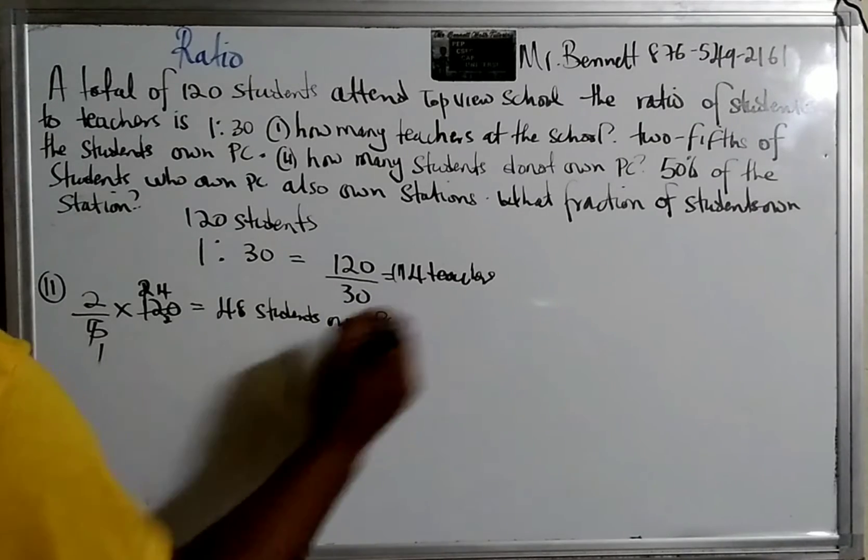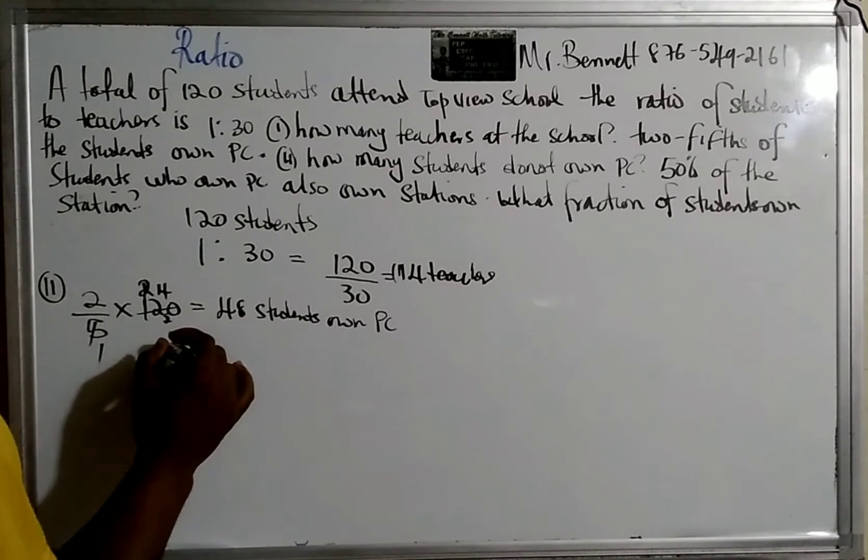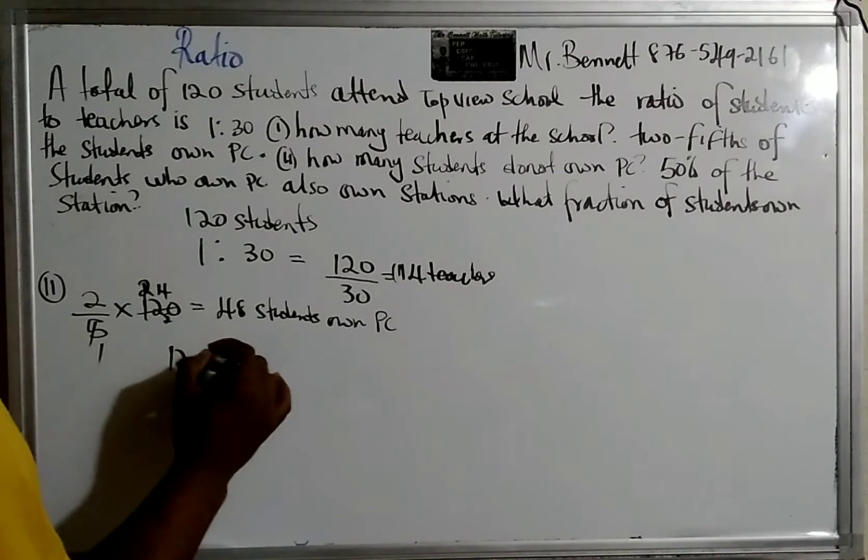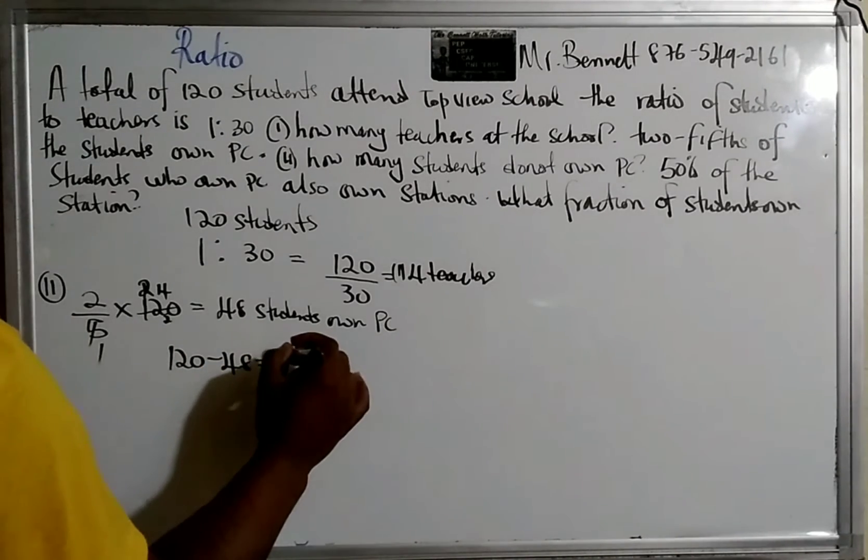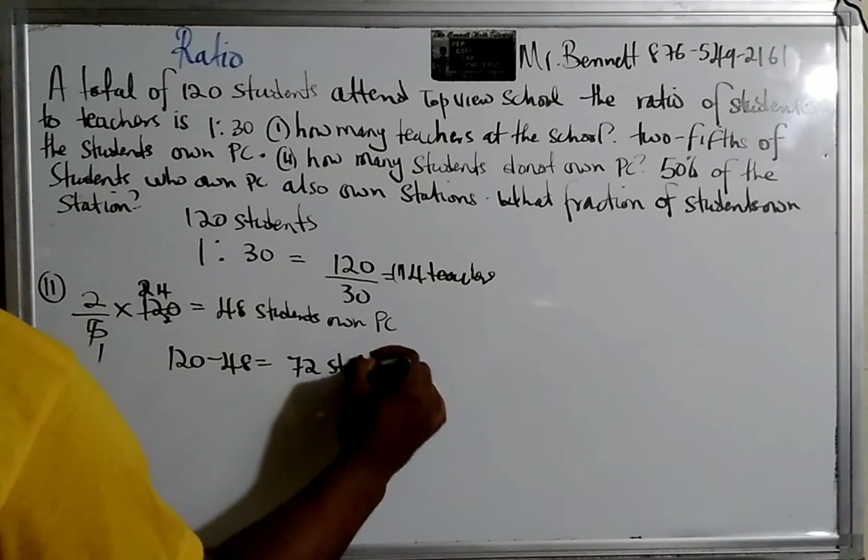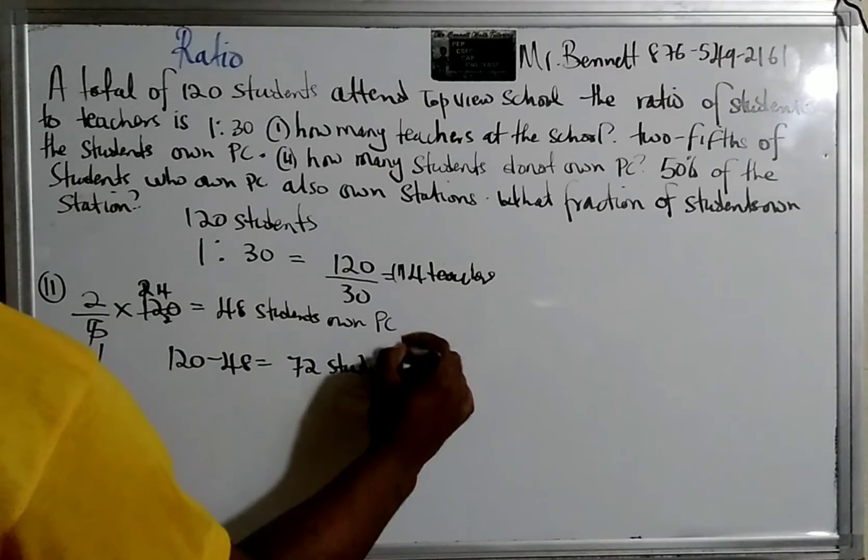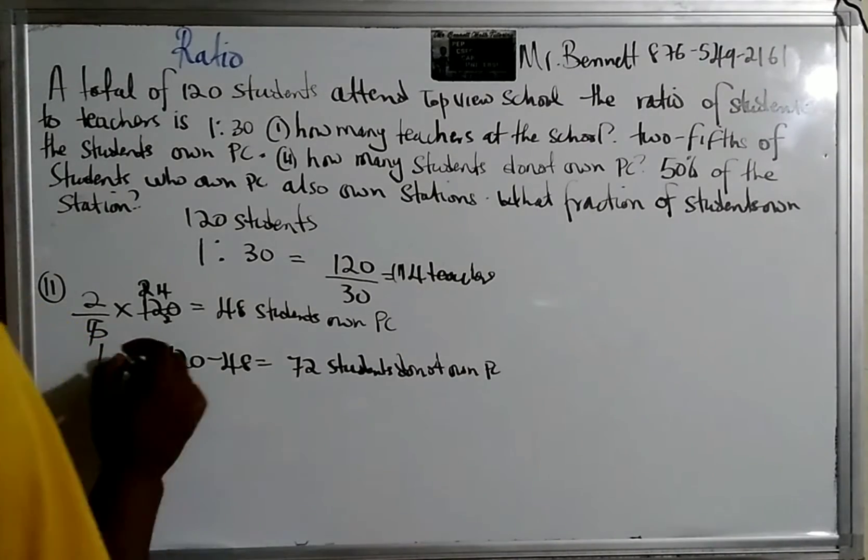But they didn't ask us that. They asked us who do not. So it would be 120 minus 48 do not own PC. So this is the answer. 72 students do not own PC. So that's the answer for two.